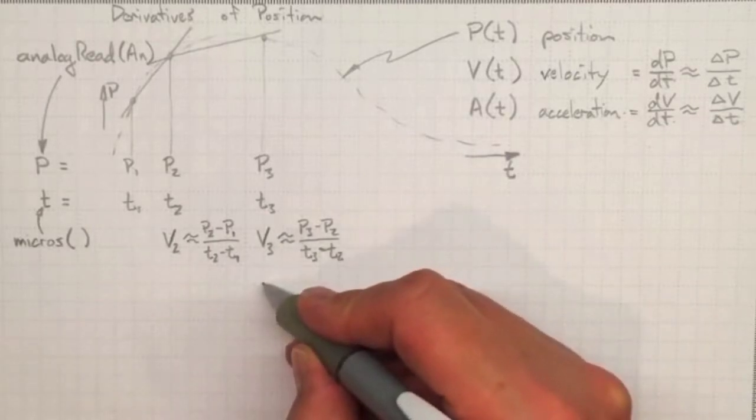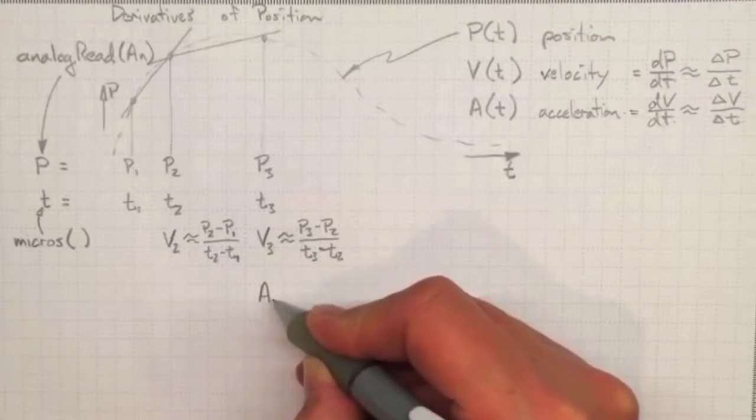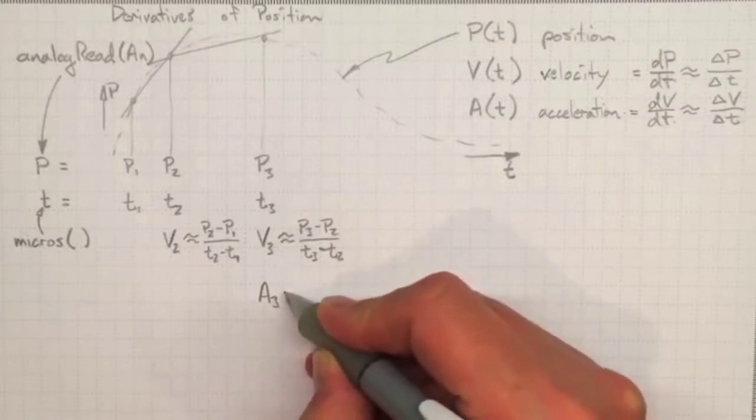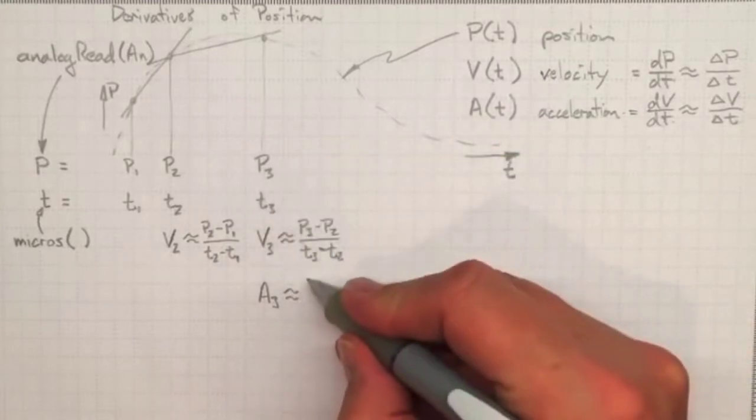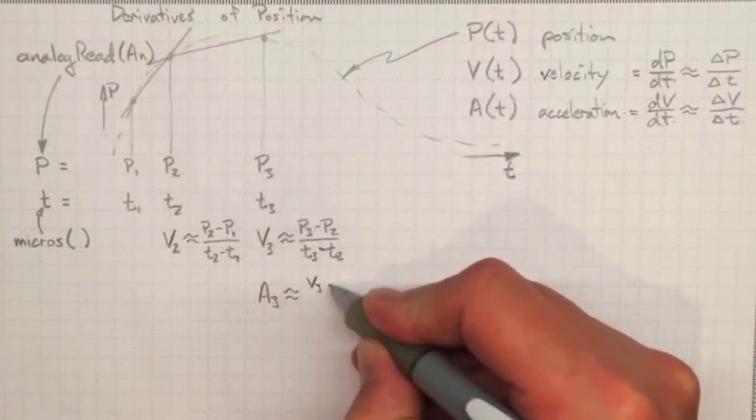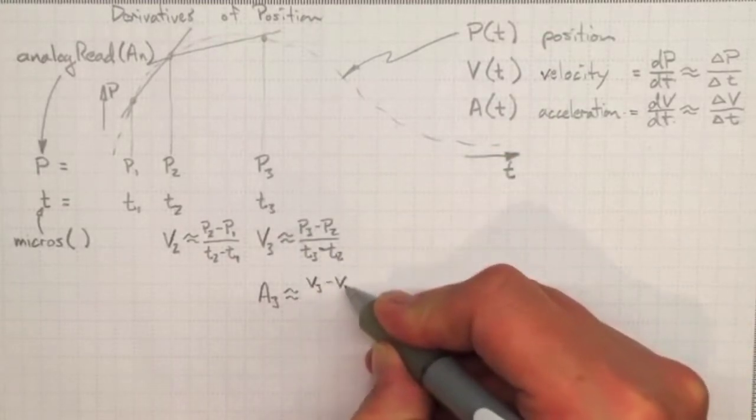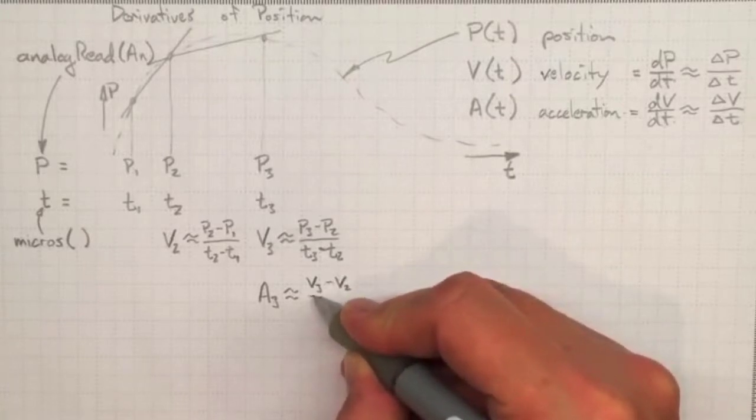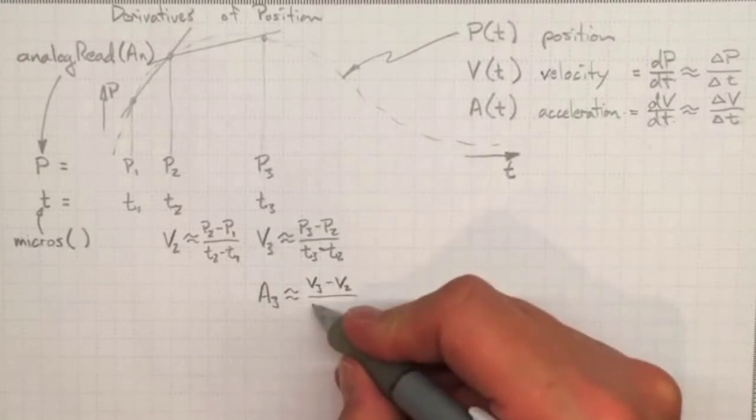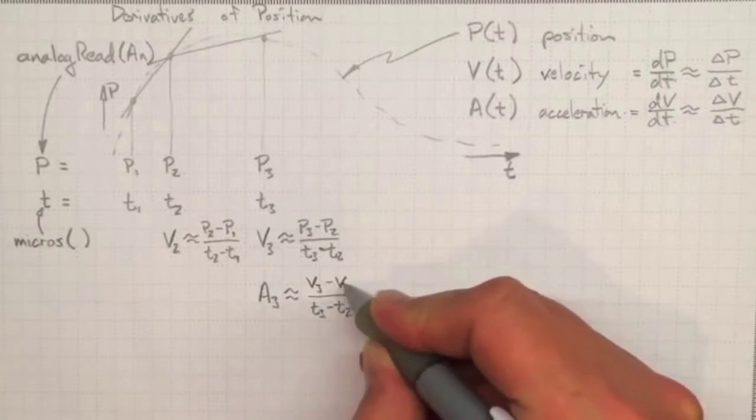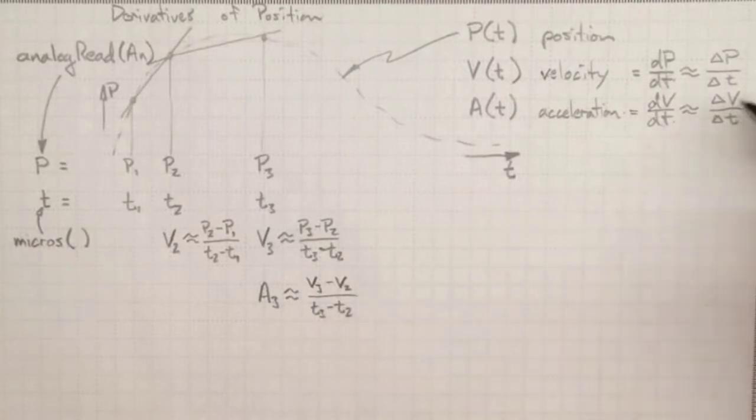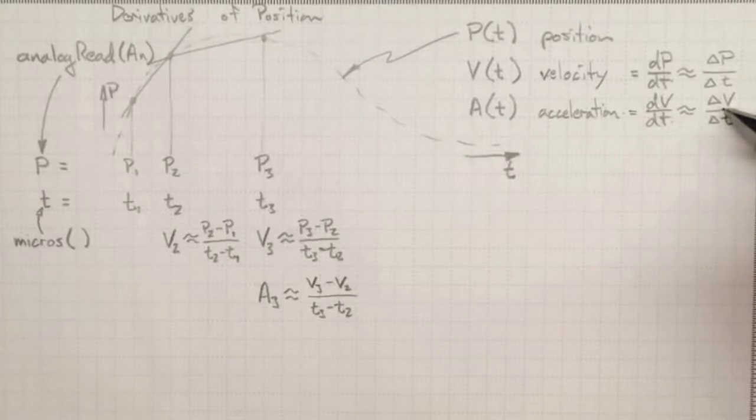Now we can estimate the acceleration at this time as being approximately equal to the velocity at time three minus the velocity at time two, divided by whatever t3 minus t2 was. So that's delta V over delta t, giving us an approximate value for the acceleration.